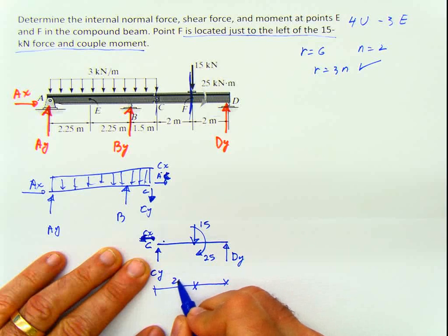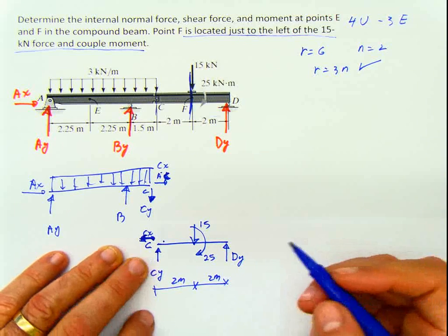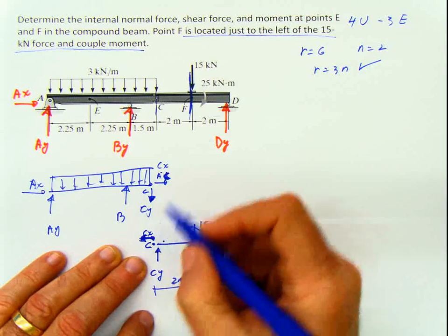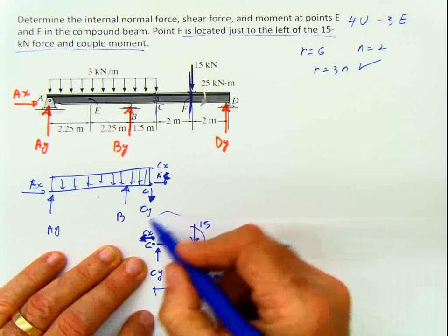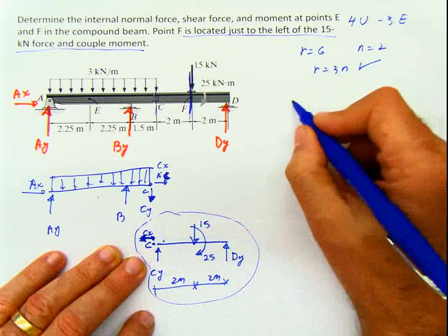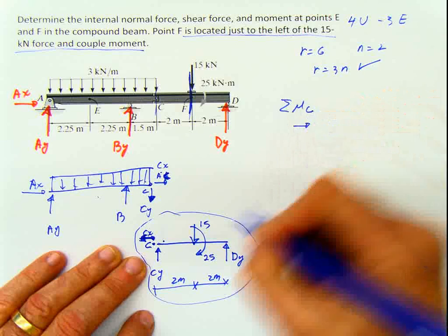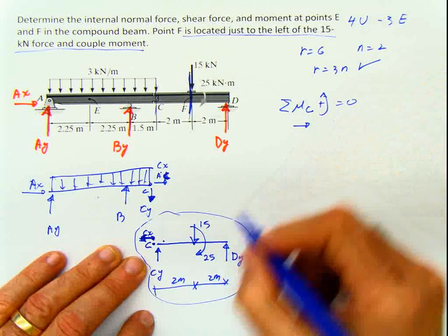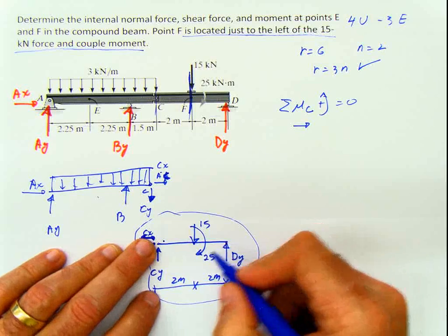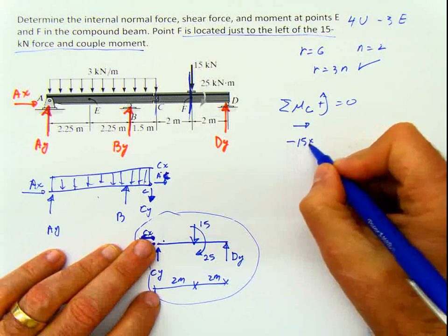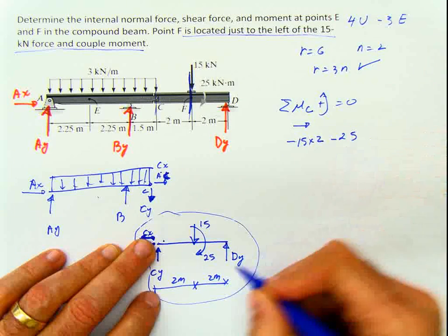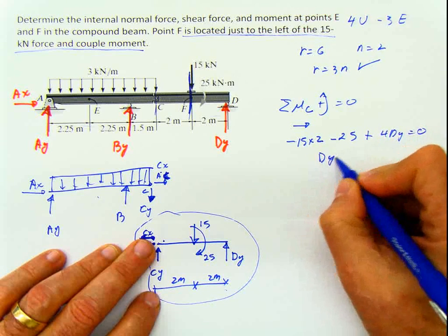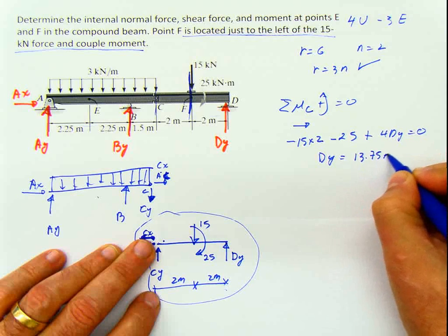The distances are 2 meters and 2 meters. There's no moment at the hinge, so we have three reactions on this side. If the whole beam is in equilibrium, every portion is in equilibrium. Doing summation of moments at C for the right side equals 0: 15 times 2 negative, minus 25, plus 4Dy equals 0. So Dy equals 13.75 kilonewtons.